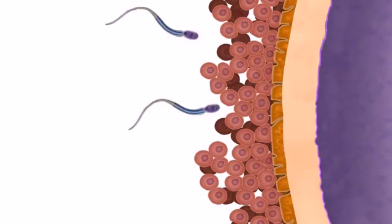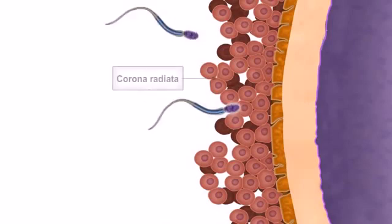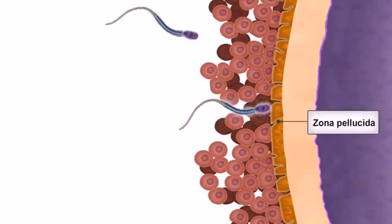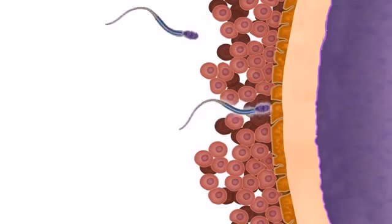The capacitated spermatozoa move through the corona radiata, a dense layer of granulosa cells surrounding the oocyte, and come into contact with the zona pellucida. The zona pellucida expresses specific receptor proteins called ZP3, which bind to proteins expressed in the heads of the spermatozoa.